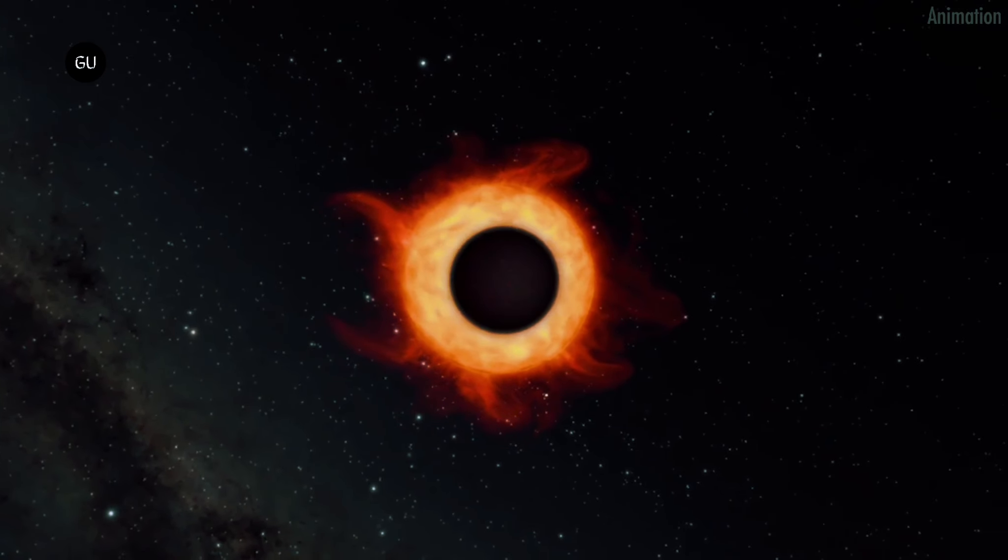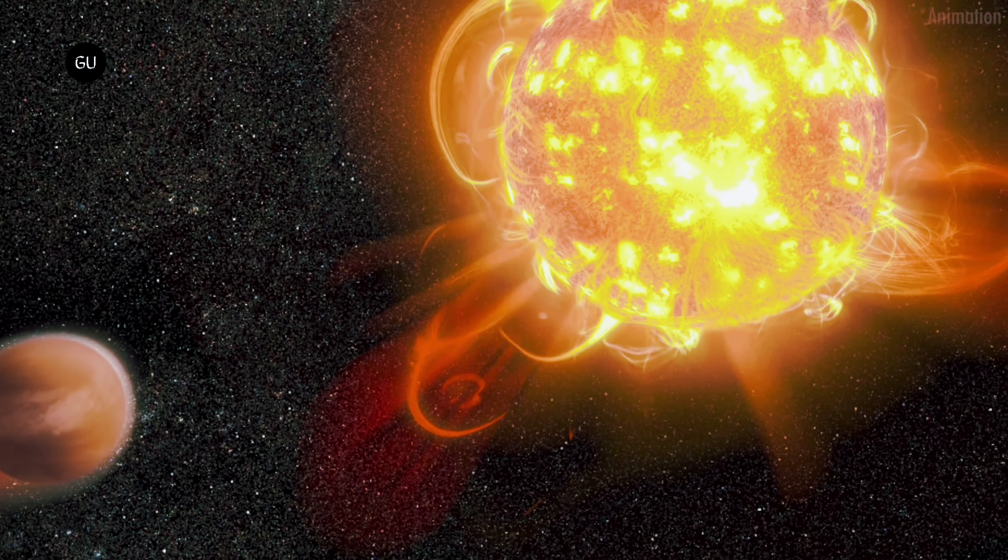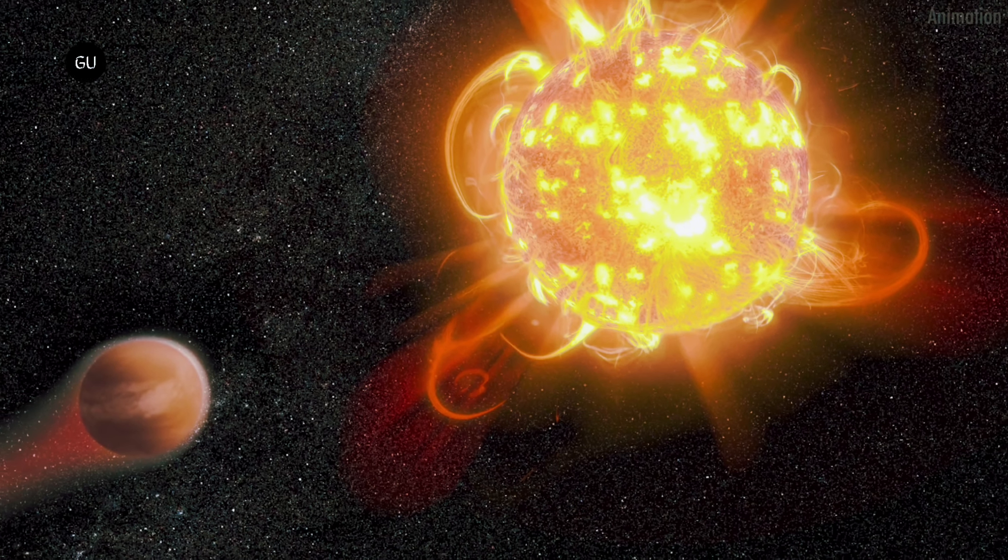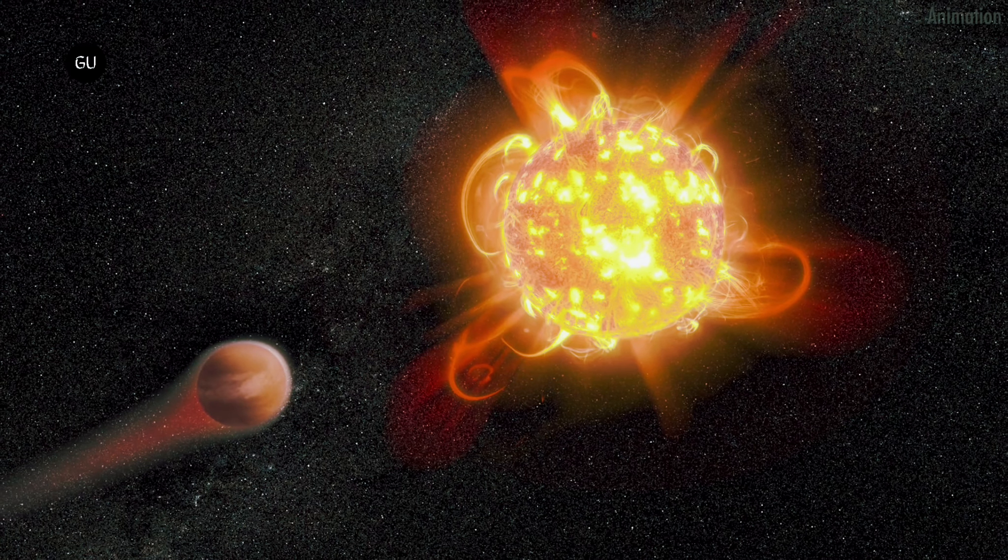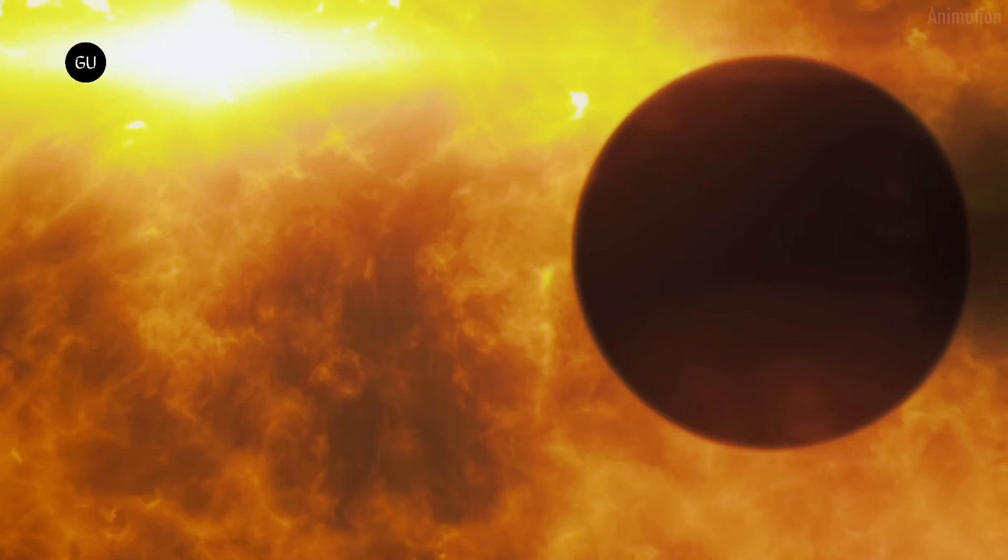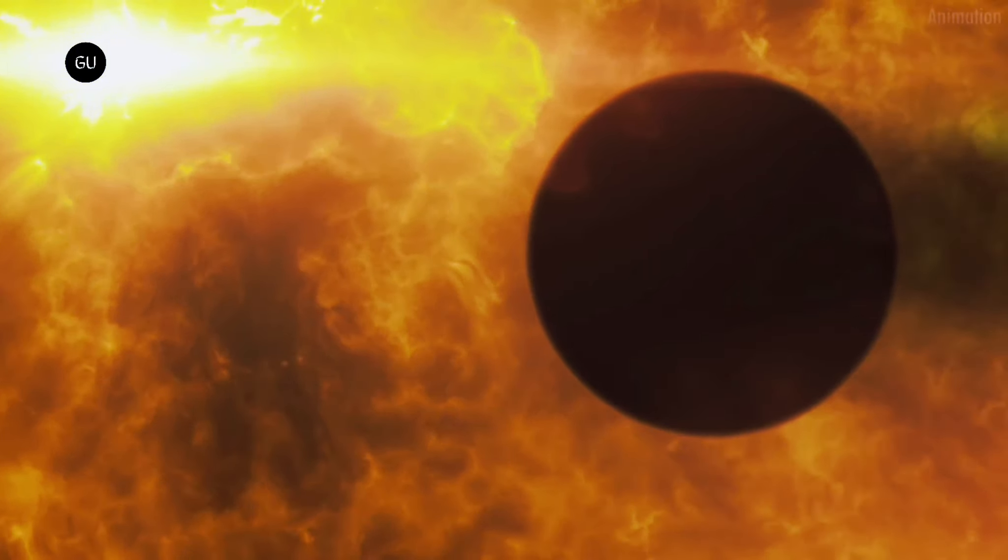Red dwarfs are the most abundant stars in our Milky Way galaxy. They are known for their ferocious stellar flares and intense magnetic fields, which can unleash energy up to 1,000 times more powerful than our Sun's outbursts. These conditions could potentially strip a planet of its atmosphere within the first 100 million years of the star's birth.